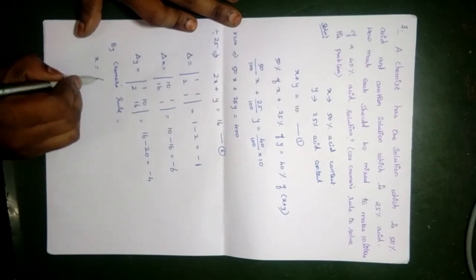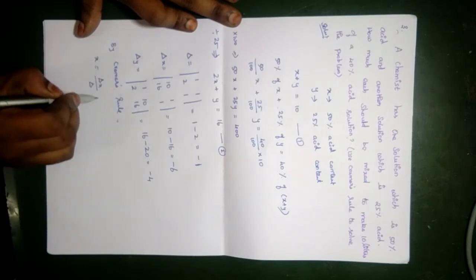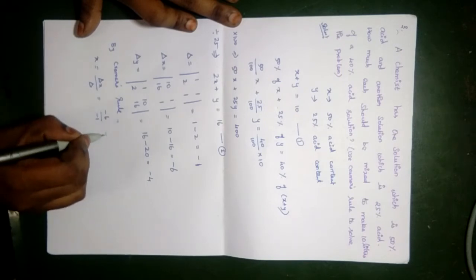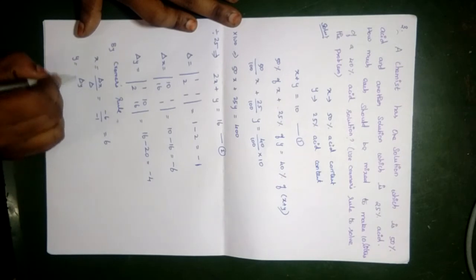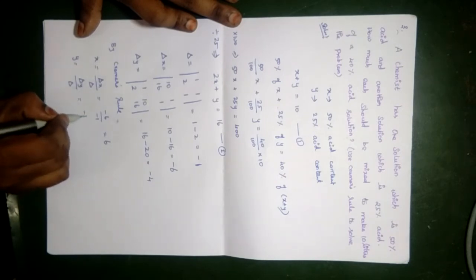x is equal to delta x by delta, that is minus 6 by minus 1, equals 6. And y is equal to delta y by delta, that is minus 4 by minus 1, equals 4.